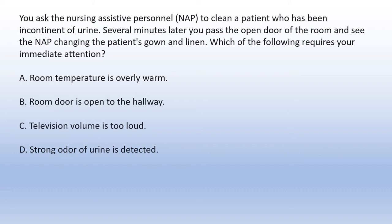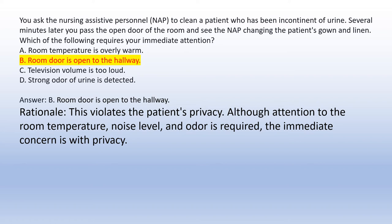You ask the nursing assistive personnel (NAP) to clean a patient who has been incontinent of urine. Several minutes later you pass the open door of the room and see the NAP changing the patient's gown and linen. Which of the following requires your immediate attention? A. Room temperature is overly warm. B. Room door is open to the hallway. C. Television volume is too loud. D. Strong odor of urine is detected. Answer B: Room door is open to the hallway. Rationale: This violates the patient's privacy. Although attention to room temperature, noise level, and odor is required, the immediate concern is privacy.